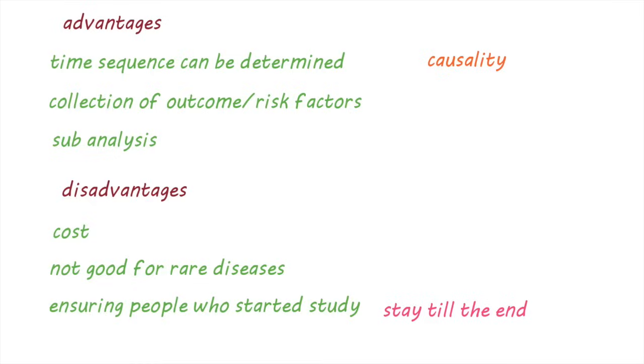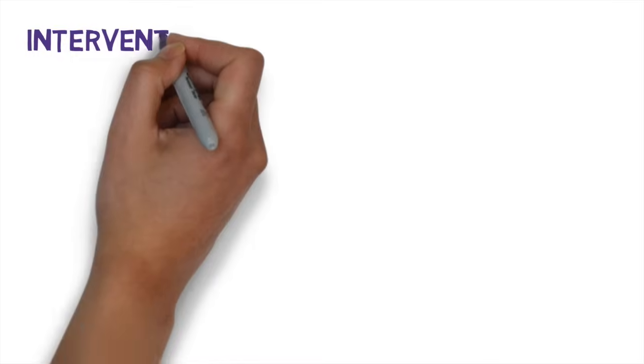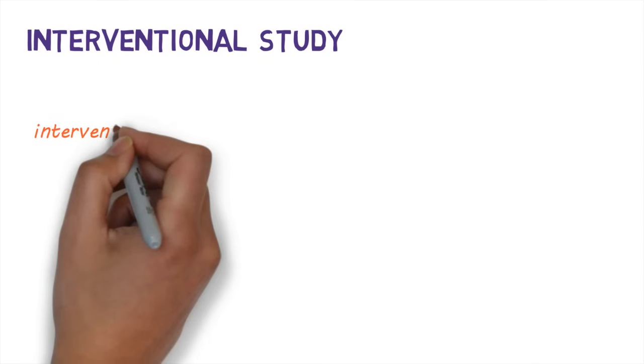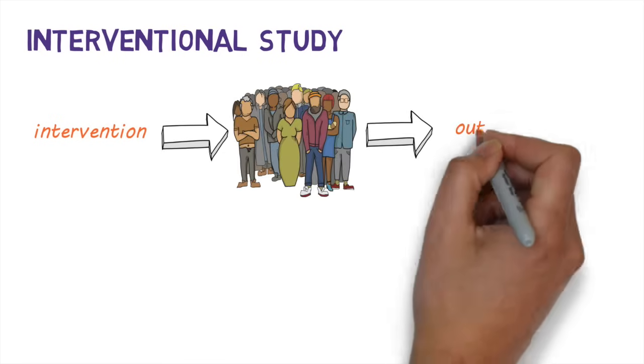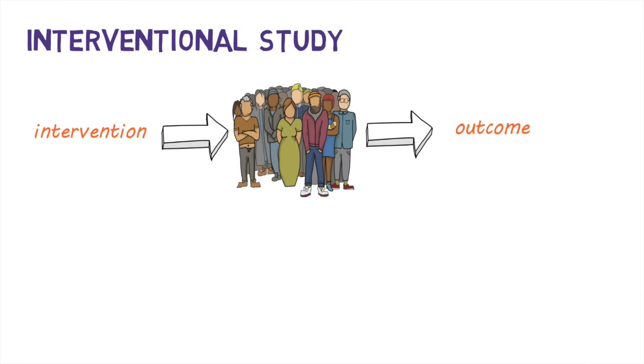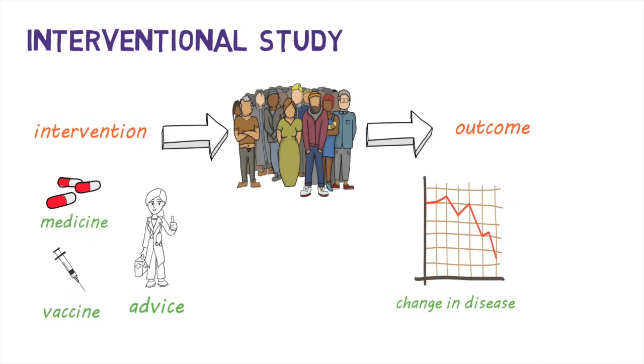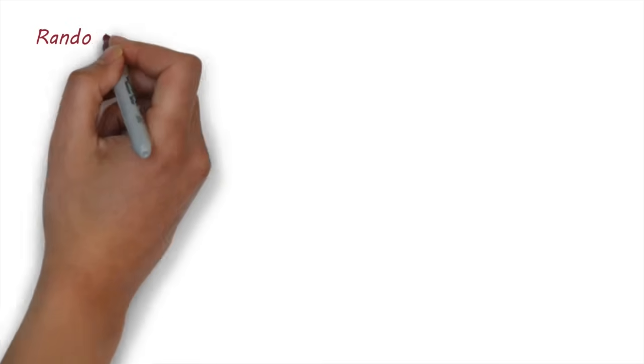Now let's look at another type of study, an interventional study. In an interventional study, an intervention is done on a group of people and the outcome studied. Examples of interventions can be giving a medicine, a vaccine, or health advice. The outcome can be things like a change in disease status or change in behavior. A randomized controlled study is the best study designed for an interventional study.